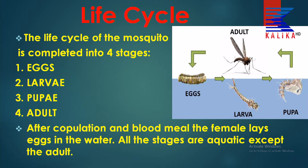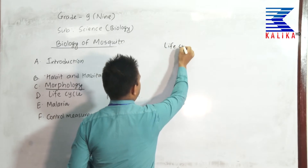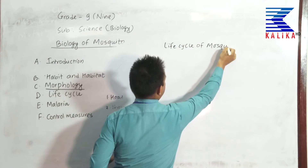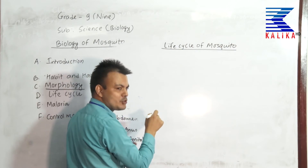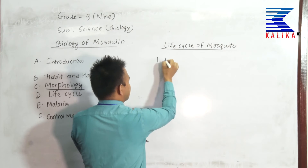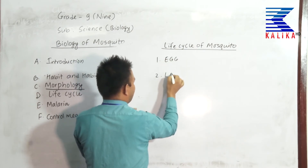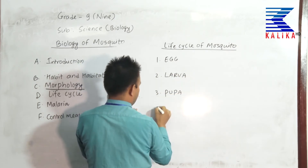Now we talk about the life cycle. As it is a typical insect, its life cycle is completed in four stages: eggs, larva, pupa, and adult. The life cycle begins after copulation and the female having a blood meal, then the female lays the eggs in water. All the stages are aquatic except the adult — meaning the egg, larva, and pupa live in water, but the adult is aerial, outside the water.